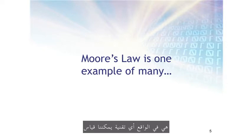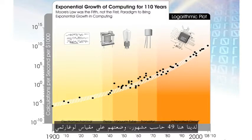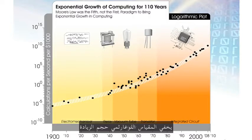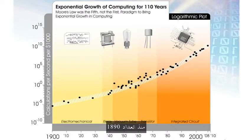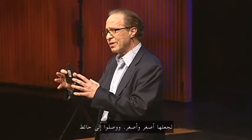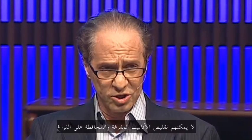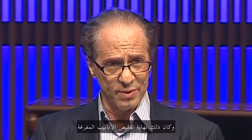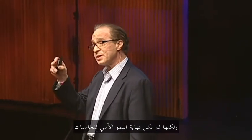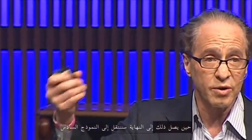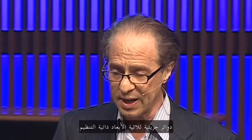It's really any technology where we can measure the underlying information properties. Here we have 49 famous computers put on a logarithmic graph. The logarithmic scale hides the scale of the increase, because this represents a trillions-fold increase since the 1890 census. In the 1950s there were shrinking vacuum tubes — making them smaller and smaller — that finally hit a wall. They couldn't shrink the vacuum tube anymore and keep the vacuum, but it was not the end of the exponential growth of computing. We went through the fourth paradigm — transistors, and finally integrated circuits. When that comes to an end, we'll go to the sixth paradigm: three-dimensional self-organizing molecular circuits.